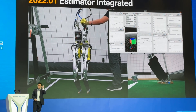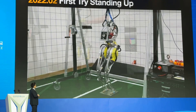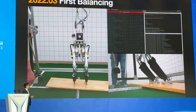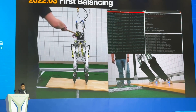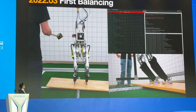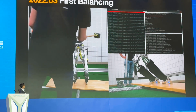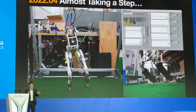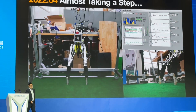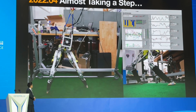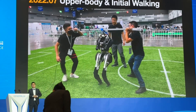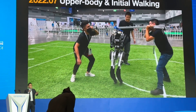Starting 2022, month by month: in January, first state estimation; in February, first standing — almost standing up, but we're getting there; in March, first balancing — shaking the ground, pushing it; in April, almost taking a step — almost, almost; in May, first steps. In July at RoboCup in Bangkok, Thailand, we first brought the robot outside the lab — and this was the very first time it started to take steps.